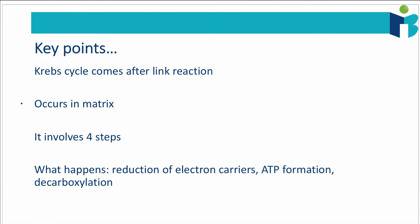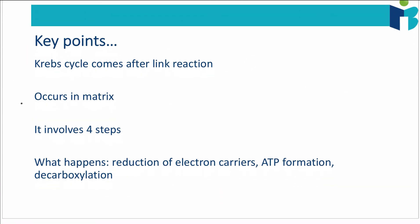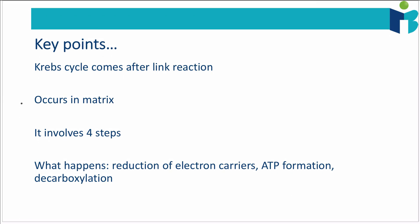So the key point to take from this video is that the Krebs cycle comes after the link reaction. It occurs in the matrix of mitochondria. It involves four steps, and along the way, we're going to be reducing electron carriers, making some ATP, and doing some decarboxylation. So in the next video, we're going to get to how these reduced electron carriers can be used to make a lot of ATP.